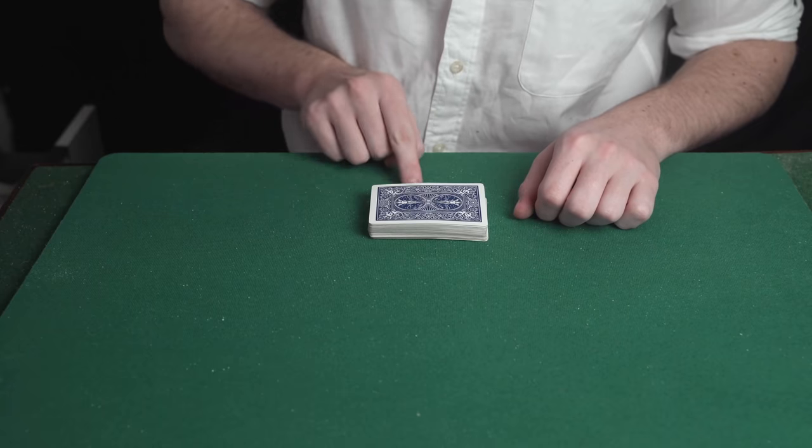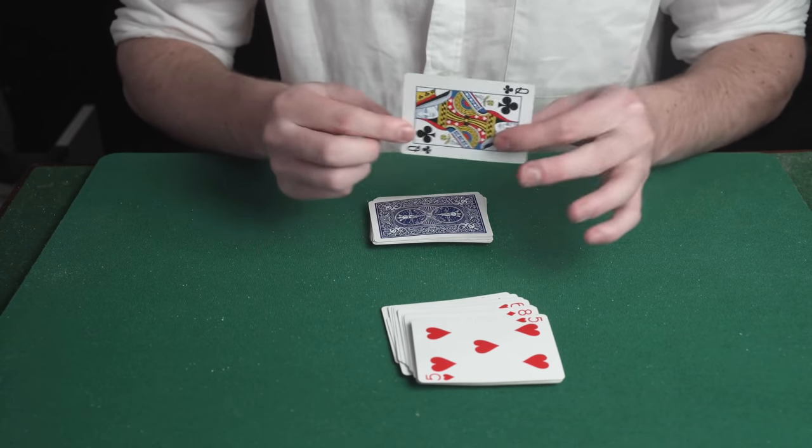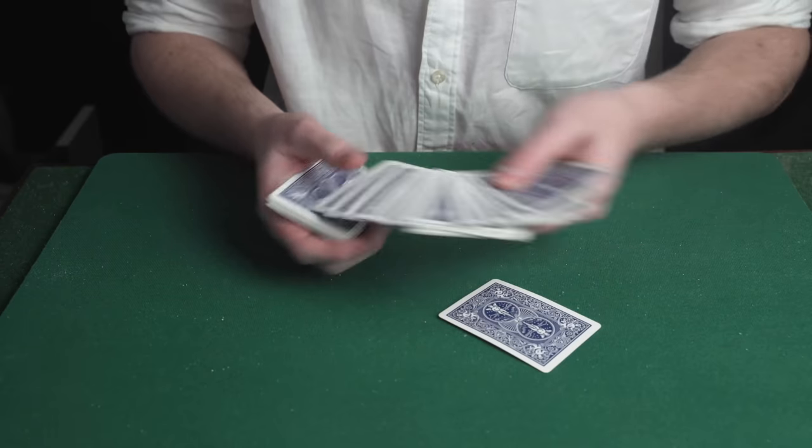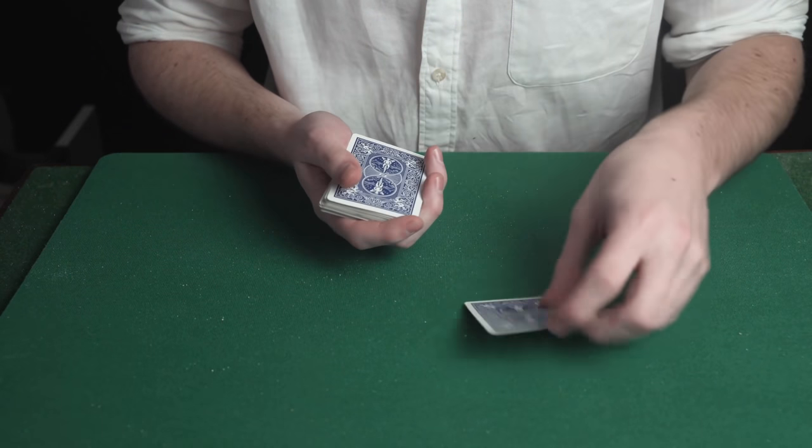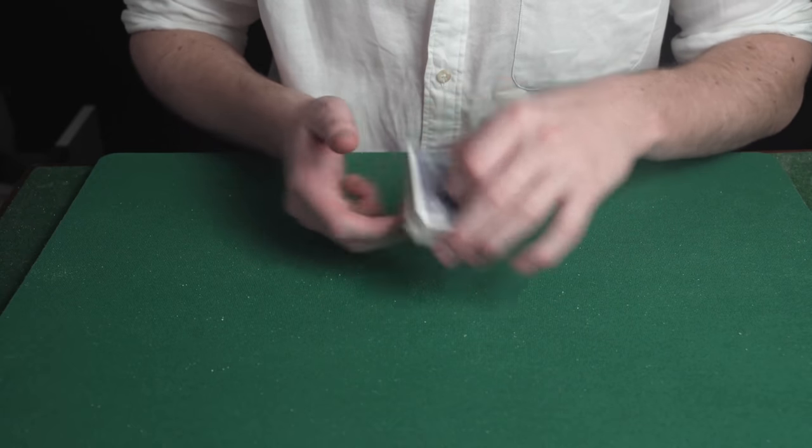I'm going to show you the fastest way to locate a spectator's chosen card. This is the kind of move that looks like you've taken 10 years to learn it, when in reality it only takes 10 seconds to learn. The spectator chooses a card, in this case the Queen of Clubs.